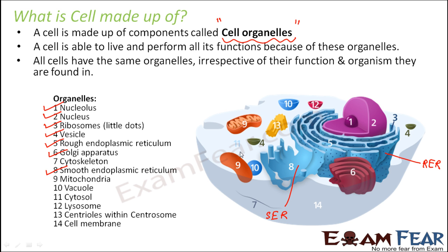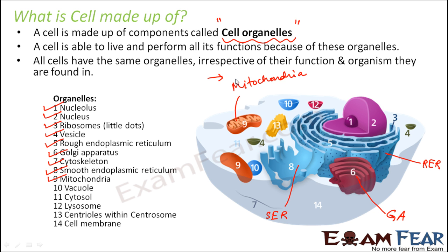The Golgi apparatus is this structure here. The cytoskeleton forms the base of the cell — just like the human skeleton over which everything else is fitted, the cytoskeleton provides that framework inside the cell. Mitochondria is this structure here, and it is very important — it is called the powerhouse of the cell because it provides all the energy to the cell.